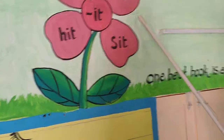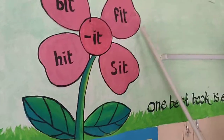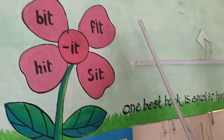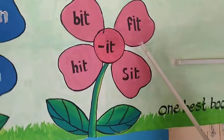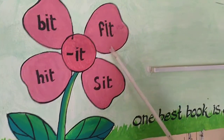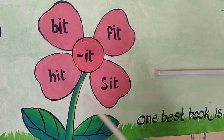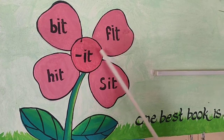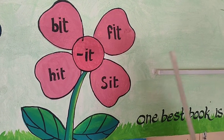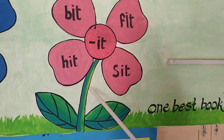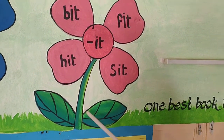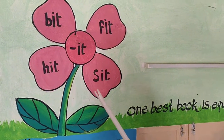Let us see this picture. This picture is red in color. The leaves are black in color. And the leaves are green in color.